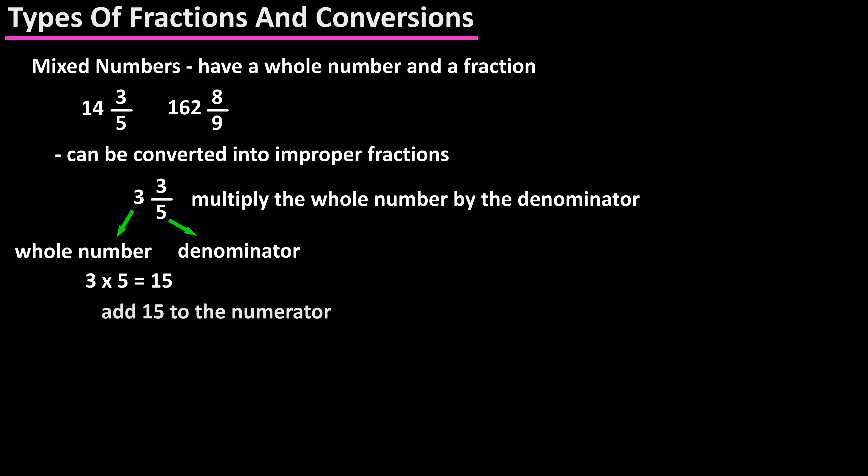Then we add that to the numerator, so 15 plus 3 equals 18, and we keep the same denominator of 5. The final improper fraction is 18 over 5. Here are a couple more examples of converting mixed numbers to improper fractions.